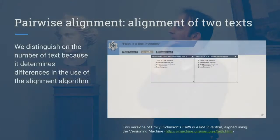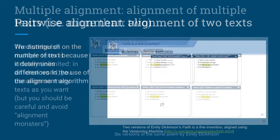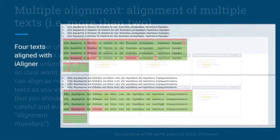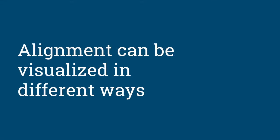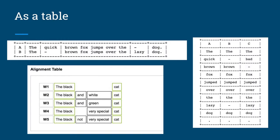We can distinguish between two types of alignment according to the number of sentences or texts to align. Pairwise alignment is when we have only two sentences or two texts. We call it multiple alignment when we have more than two texts — three, four, or an unlimited number of parallel texts. The aligned text could be visualized as a table, either vertical or horizontal, as we can see.